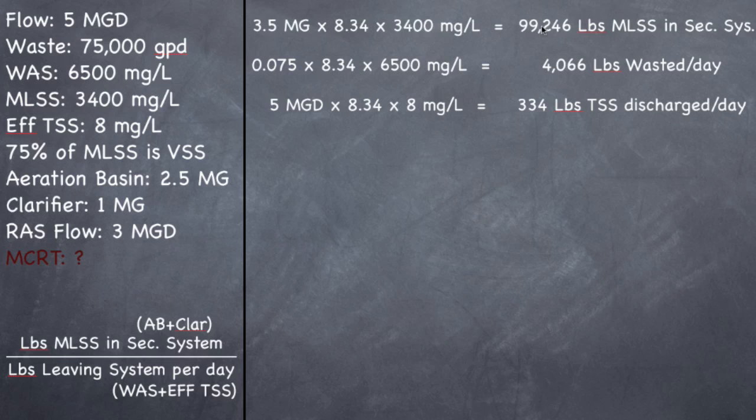So we've got the top part of the formula. We need to add these two together to get the bottom part of the formula. It's WAS plus effluent TSS. When I add 334 plus 4,066, you should get 4,400 pounds leaving per day. That's how much is leaving your secondary system total per day.